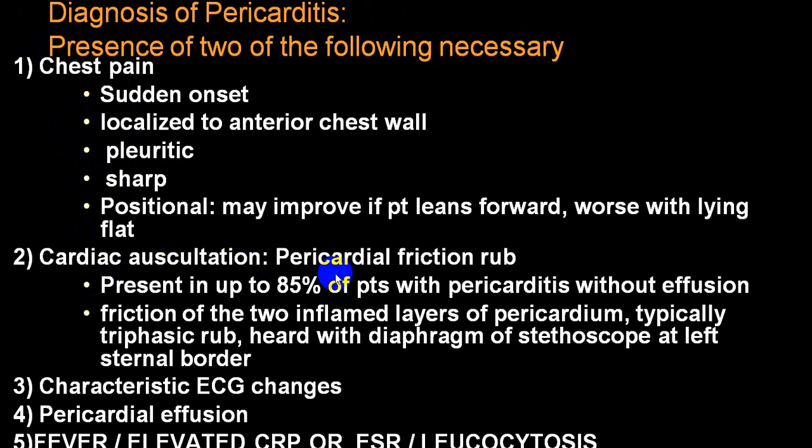On auscultation, if you hear a friction sound during both systole and diastole — sometimes called a triphasic rub — heard with the diaphragm of the stethoscope at the left sternal border, that is pericardial friction rub. Its intensity increases by applying pressure on the stethoscope, which brings the two layers together, or by the patient bending forward. This rub does not disappear when the patient holds their breath. There will also be ECG changes and evidence of pericardial effusion on clinical grounds or by echocardiography, along with fever, elevated CRP, ESR, or leukocytosis.